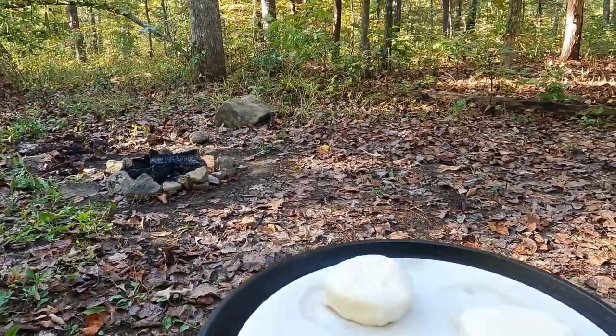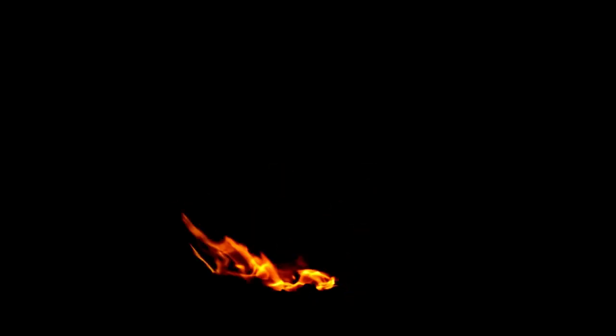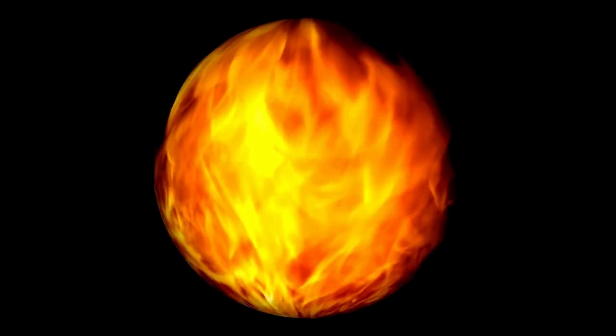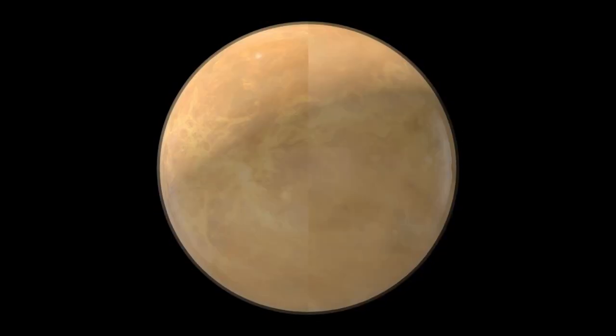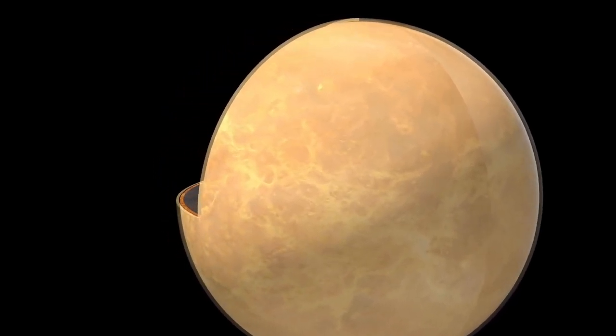Even more fascinating is the idea that Kepler-70b's survival may have helped reshape its dying star. When the gas giant was pulled into the expanding red giant, it would have interacted directly with the star's outer layers.